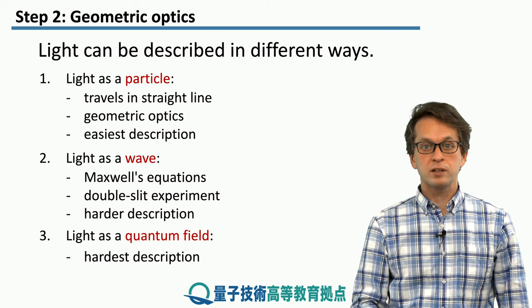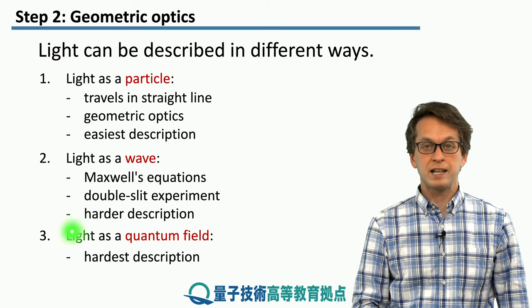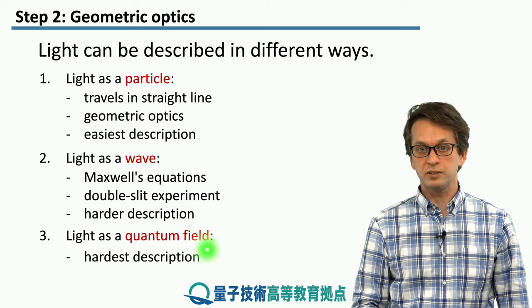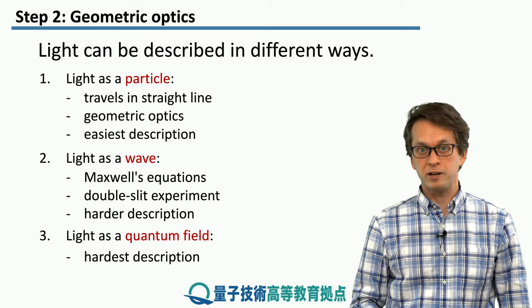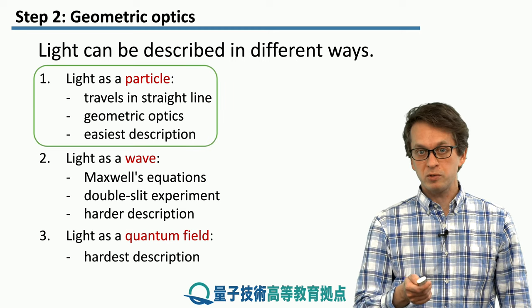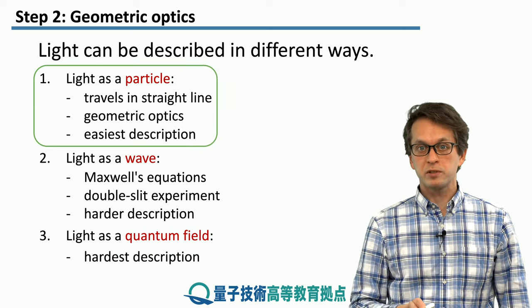Finally, the third description is quantum field theory because light fundamentally is a quantum field, but we're not going to worry about this at all. We're only going to use geometric optics, the simplest description.